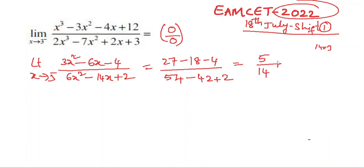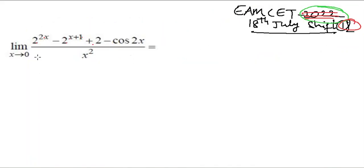5/14 is the answer. Next: limit x tends to 0 of (2^(2x) - 2^(x+1) + 2 - cos 2x) / x². Substituting x = 0, this is 0/0 form.